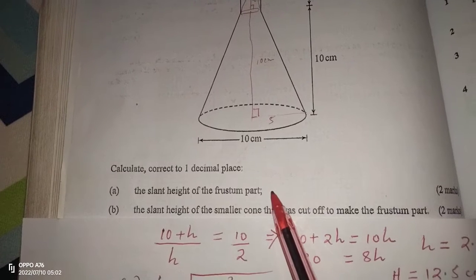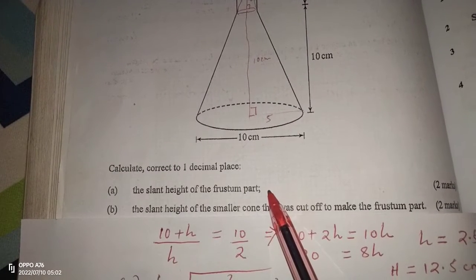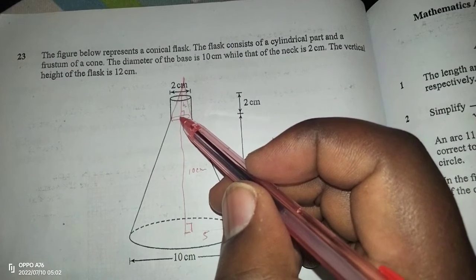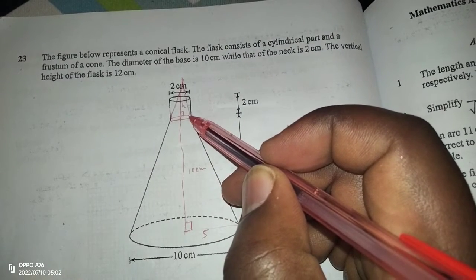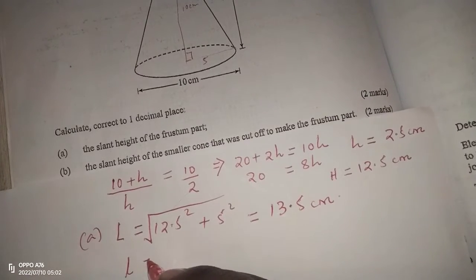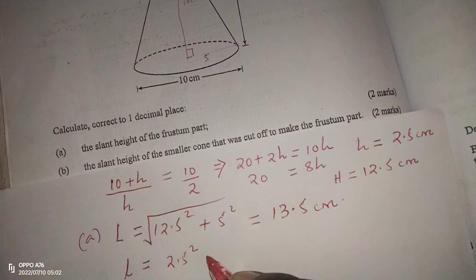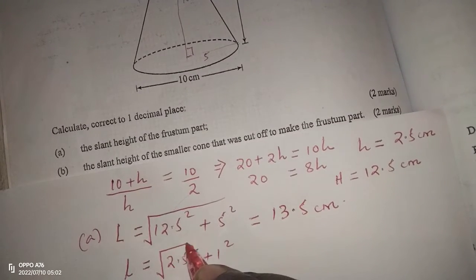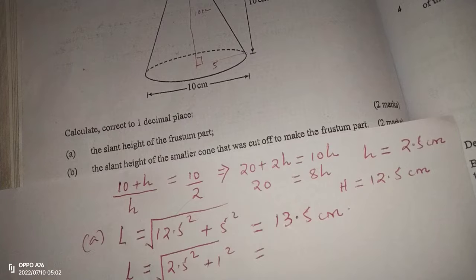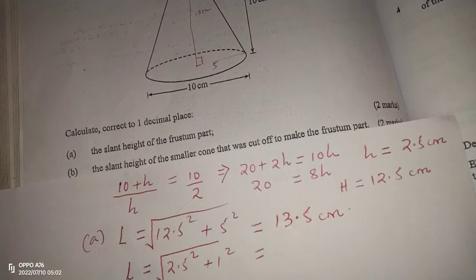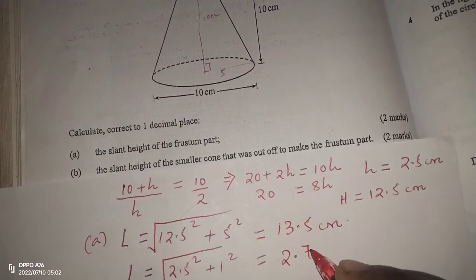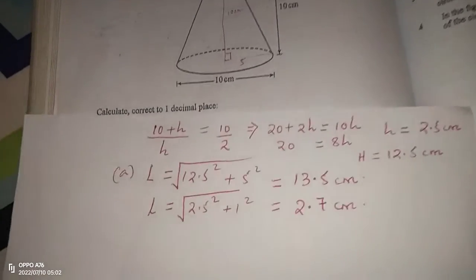For the slant height of the smaller cone that was cut off: the diameter is 2 so the radius is 1 centimeter, and the height is 2.5 centimeters. The small slant height l = √(2.5² + 1²), which gives 2.69, so 2.7 centimeters to 1 decimal place.